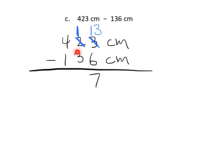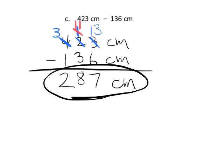Now we have 1 ten left, and we need to take away 3 tens — we don't have enough tens. So we go next door and take one of the hundreds, leaving us with 3 hundreds. That 100 equals 10 tens, and we already have 1 ten, so now we have 11 tens. 11 minus 3 is 8 tens. Then 3 hundreds minus 1 hundred gives us 2 hundreds. The answer is 287 centimeters.